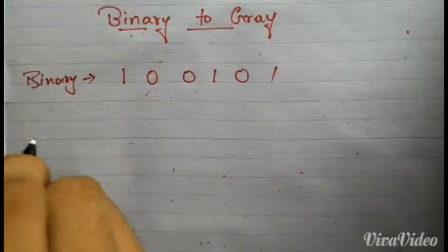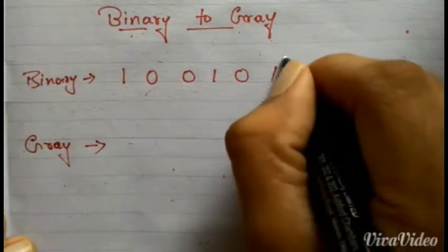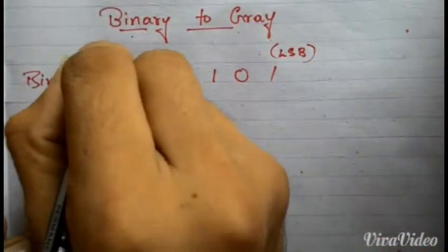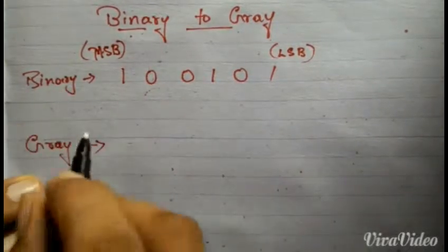This is the least significant bit of the binary, and this is the most significant bit of the binary code. To write the gray code from this binary code, the first thing we have to do is write the most significant bit of the binary code as it is.